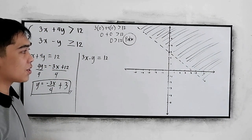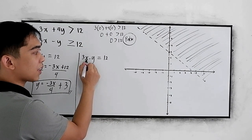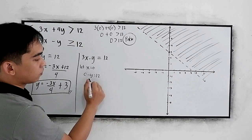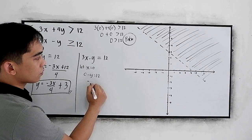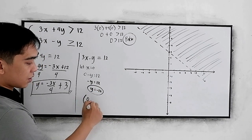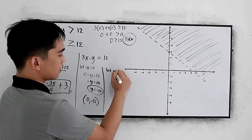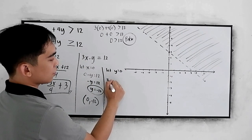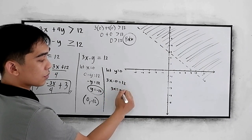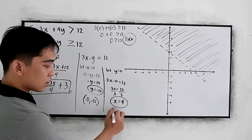Now proceed to the second inequality. Let us use the intercept method. Let x equal 0: 0 minus y equals 12, so y equals negative 12. The point is (0, negative 12). Let y equal 0: 3x equals 12, so x equals 4. The point is (4, 0).